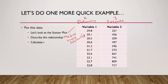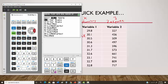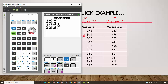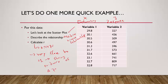To calculate R, hit the Stat button, scroll over to Calc, and choose option 4, LinReg. Scroll down to Calculate, or on the TI-83 just hit Enter. The result is r equals 0.9471, rounded to four decimal places. This is again very close to positive 1, so there's strong evidence of a positive linear relationship.